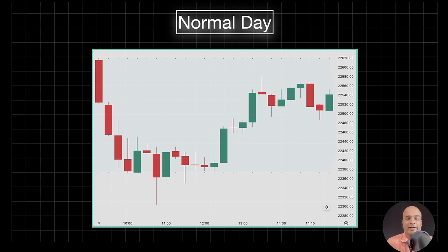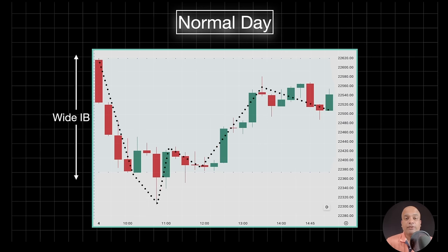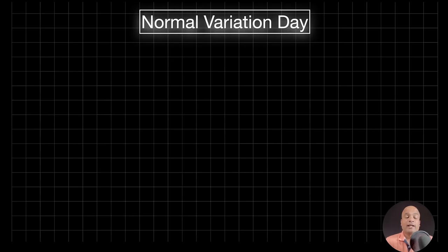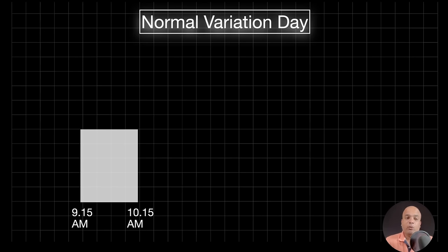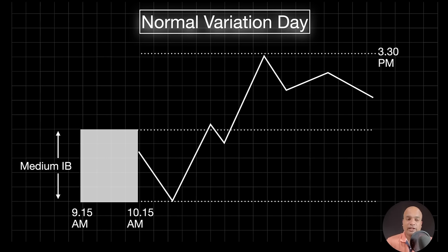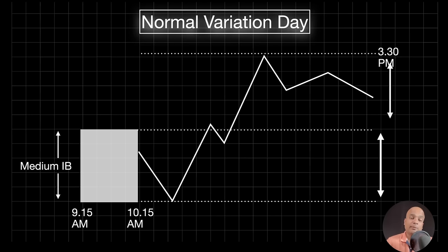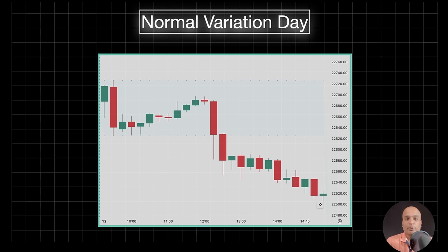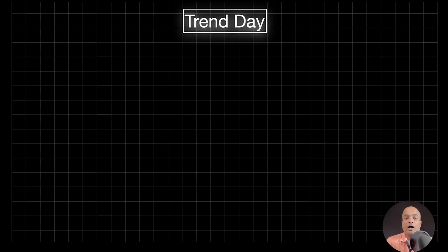In a normal day, the market starts with a wide IB and most of the price action stays within the IB range. In a normal variation day, there is a medium IB range — whereas in a normal day it is wide. In a normal variation day, price extends either upside or downside almost equal to the length of the IB range. This is the important structure of the normal variation day. For example, the IB range is medium and price extended on the downside almost equal to the length of the IB range.